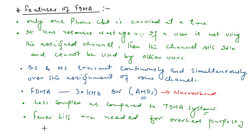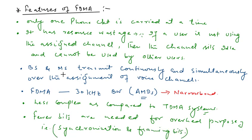Fewer bits are needed for synchronization and framing purposes because mobile stations and base stations transmit continuously as soon as they receive their voice channels. However, FDMA is higher in cost than TDMA because the single channel per carrier design requires costly band-pass filters to eliminate spurious radiations at the base station.